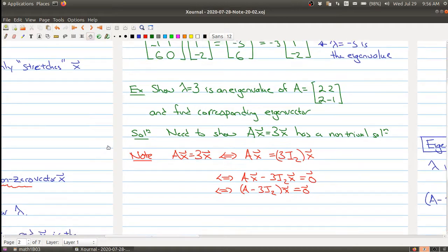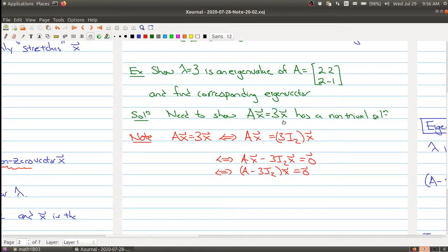What we need to do is we want to show that this guy has a non-trivial solution so we need to show that this system here has a non-trivial solution but this is just a matrix. A minus 3 times the identity matrix is a matrix. So let me rewrite this so it's clear in your notes what we need to do.